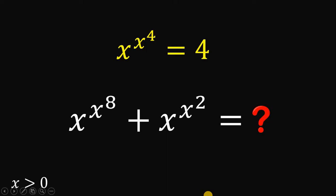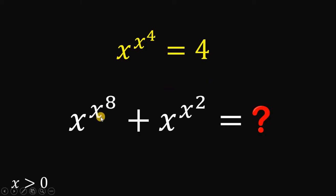Good day everyone, here's our math challenge for today. Given that x raised to x raised to 4 equals 4, what is the value of x raised to x raised to 8 plus x raised to x raised to 2, wherein x is strictly greater than 0?